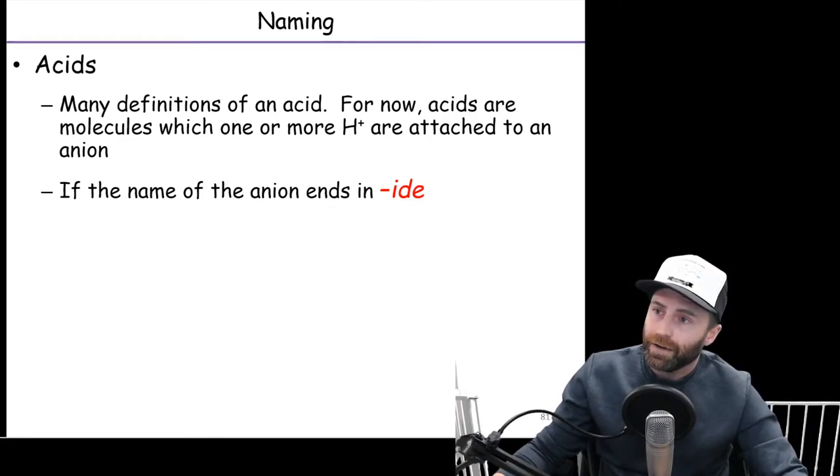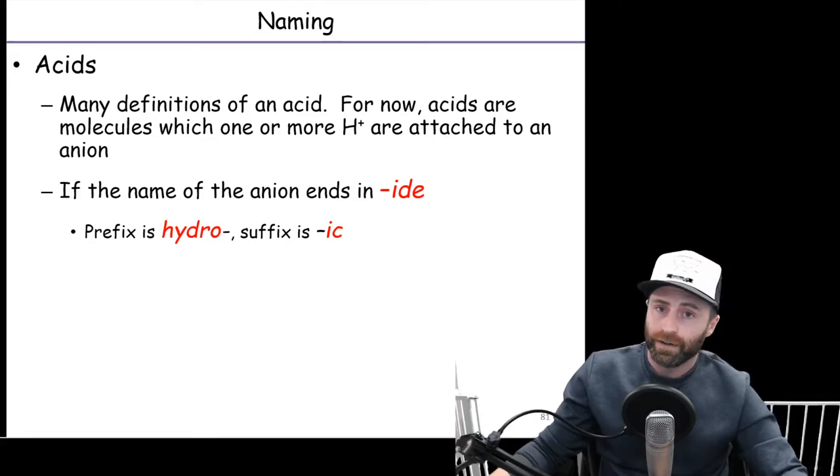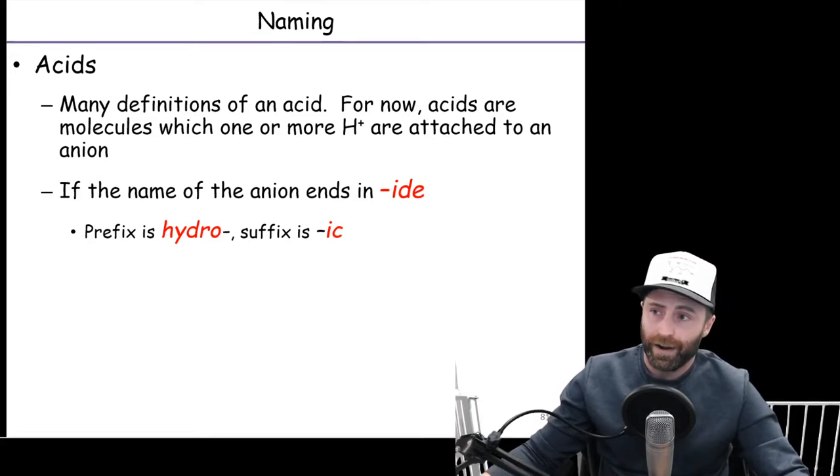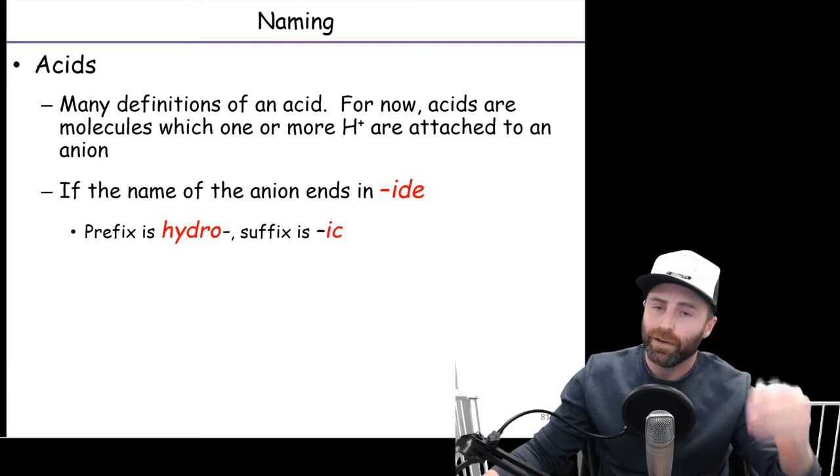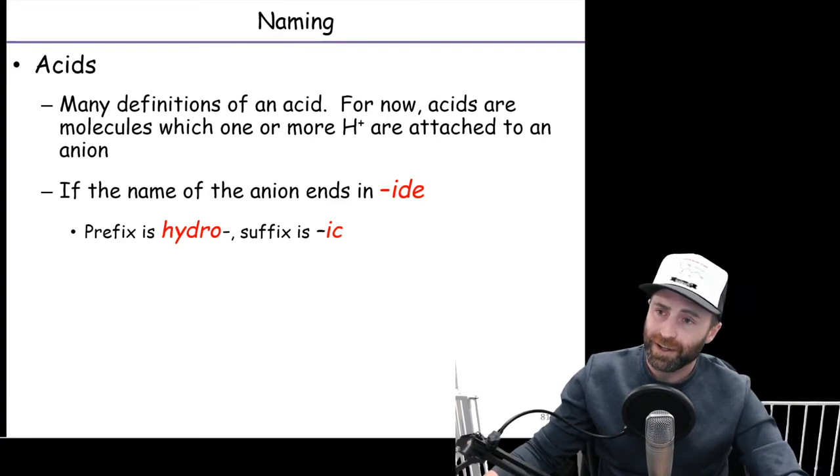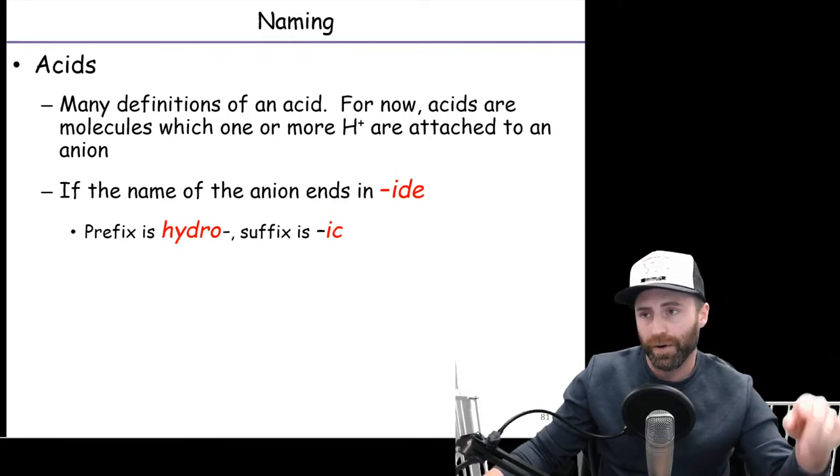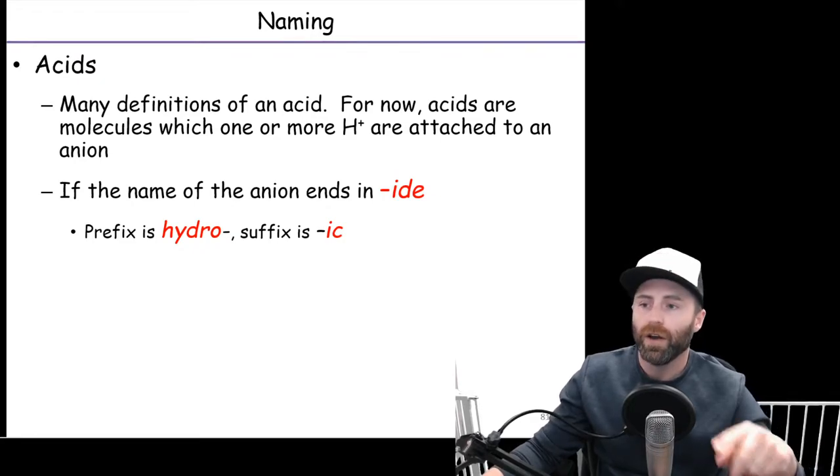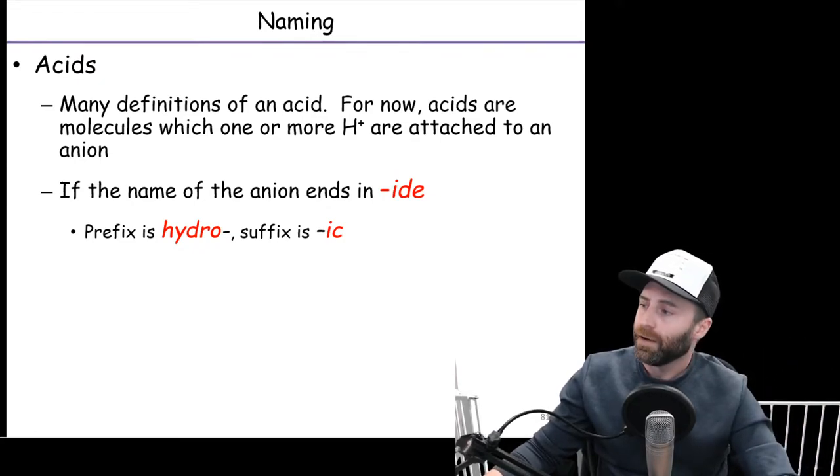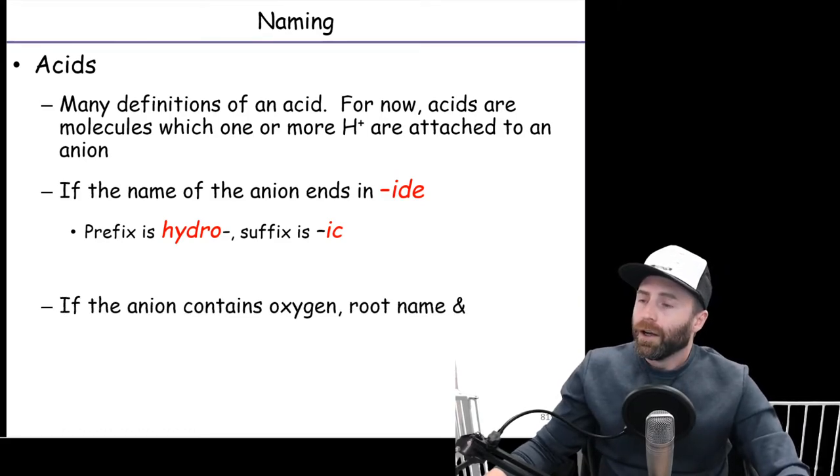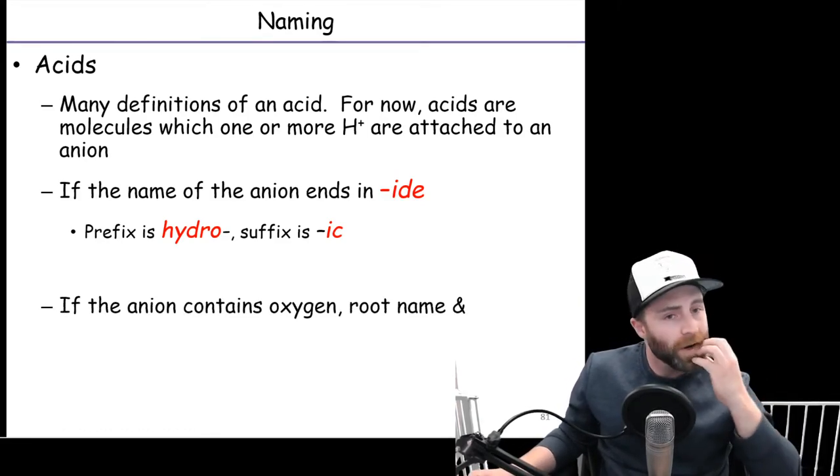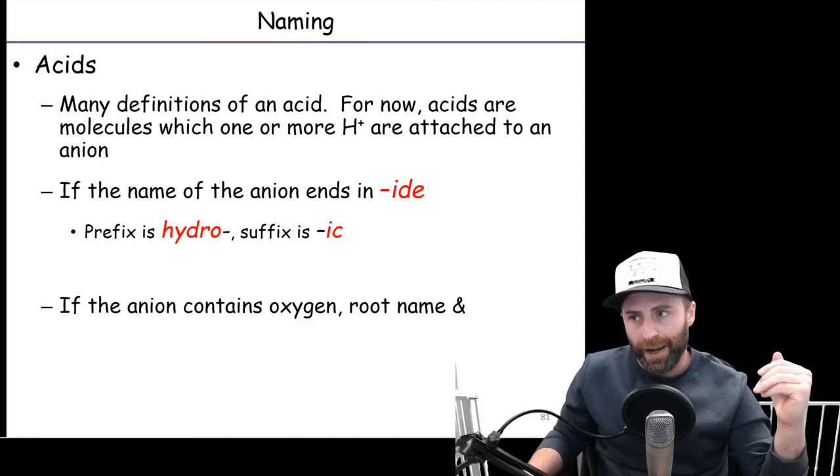If we've got an anion and the anion ends in -ide, so like think about chlorine - the anion of chlorine is chloride. So if it ends in that -ide, we kill that -ide, we put -ic in its place, so it's chloric, but we have to put the prefix hydro- in front of it. So we have hydrochloric acid. And that's going to work for pretty much any monoatomic anion.